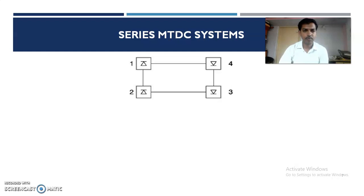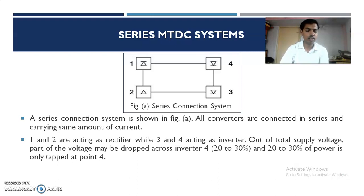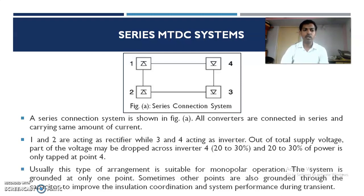In series MTDC systems, as shown in figure A, all converters are connected in series and carry the same amount of current, as is fundamental in series networks. Points 1 and 2 act as rectifiers while points 3 and 4 act as inverters. Out of the total supply voltage, a part — about 20 to 30 percent — may be dropped across the inverter port, meaning only 20 to 30 percent of power is tapped at that point. This arrangement is suitable for monopolar operation, and the system is grounded at one point, with other points sometimes grounded through capacitors to improve insulation coordination and system performance during transients.